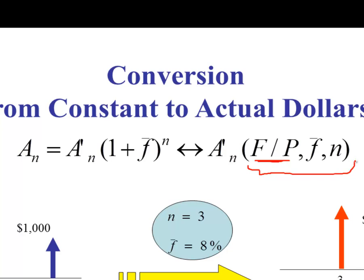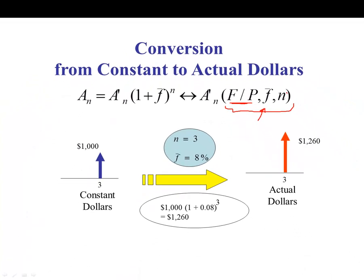The factor uses the interest rate F-bar, the average inflation rate. Whatever the inflation percentage is, you go to the end of the book, find (F given P) with that value and number of periods N. Let's take an example.